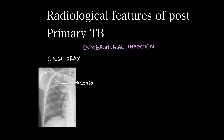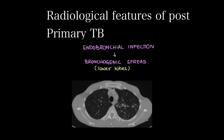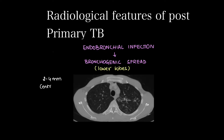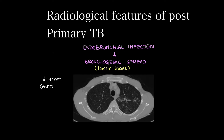The endobronchial infection can spread to other lobes and segments — this is known as bronchogenic spread of infection, more commonly seen in lower lobes. There can be 2–4 mm centrolobular nodules which classically show endobronchial spread or tree-in-bud appearance. This can be seen in various infections which show endobronchial spread.